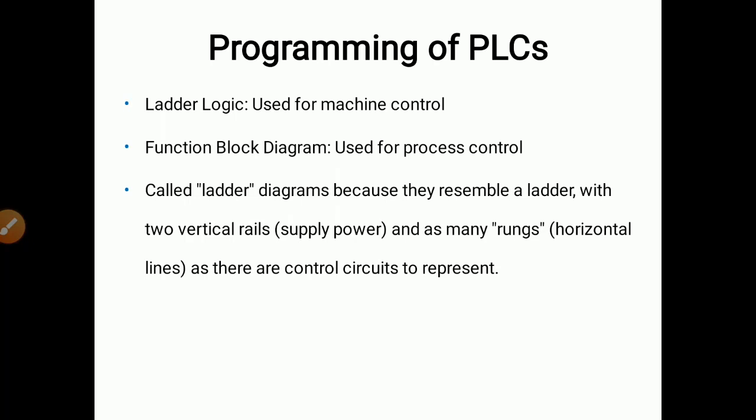The third point is we need ladder diagrams because they resemble a ladder with two vertical rails and as many rungs as there are control circuits to represent. We call PLC programming a ladder diagram because it resembles a ladder. The ladder has two vertical lines and in between them horizontal lines. In PLC, the two vertical rails are called supply power lines and the horizontal lines are called rungs.